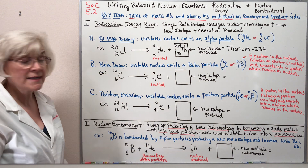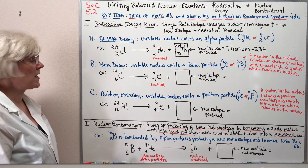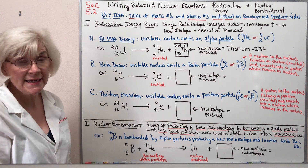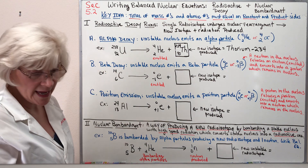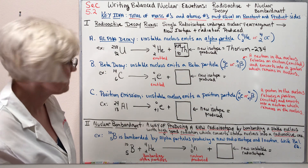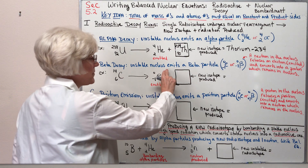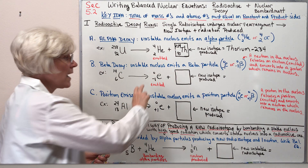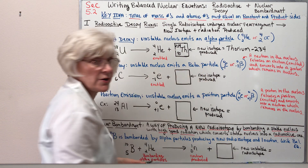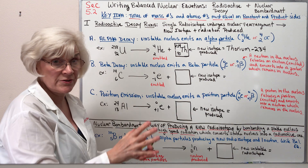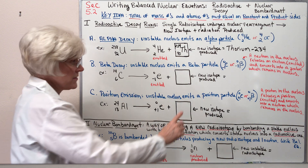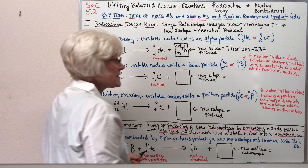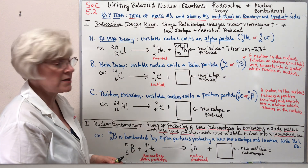Let's take a look at another type of decay process — beta decay. With beta decay, we have an unstable nucleus spontaneously emitting a beta particle out of the nucleus. The notation for a beta particle we looked at previously.